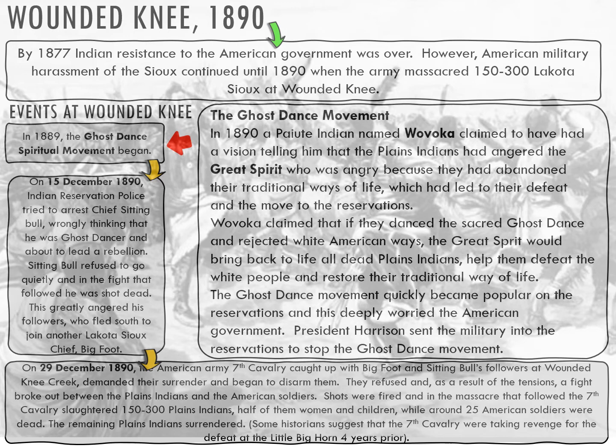The Ghost Dance movement becomes very popular very quickly on the reservations, which worried the American government. So President Harrison sent the military in to stop the Ghost Dance. In December of 1890, reservation police tried to arrest Sitting Bull, who was leading the Ghost Dance movement and thinking of leading a rebellion. Sitting Bull refuses to go quietly and is ultimately shot dead, which angers his followers who flee south.